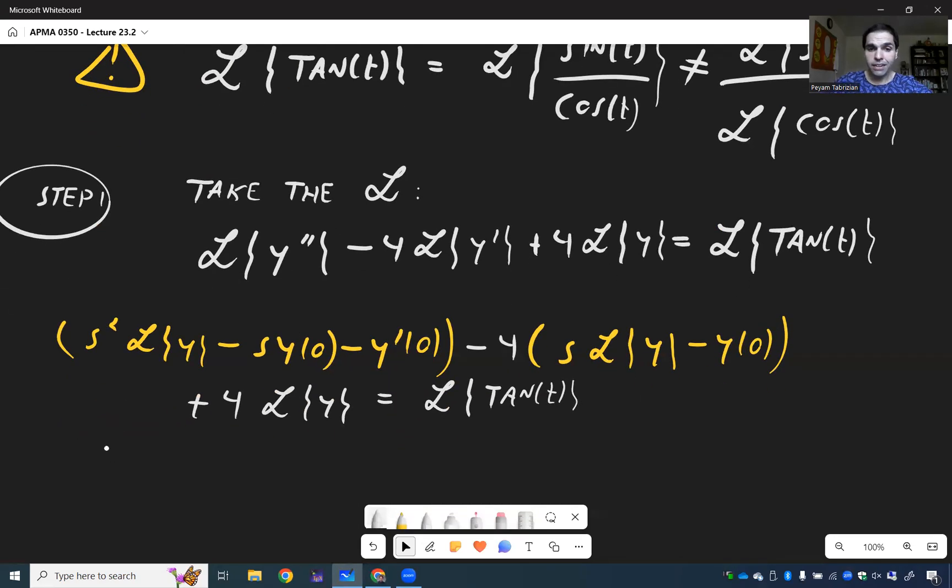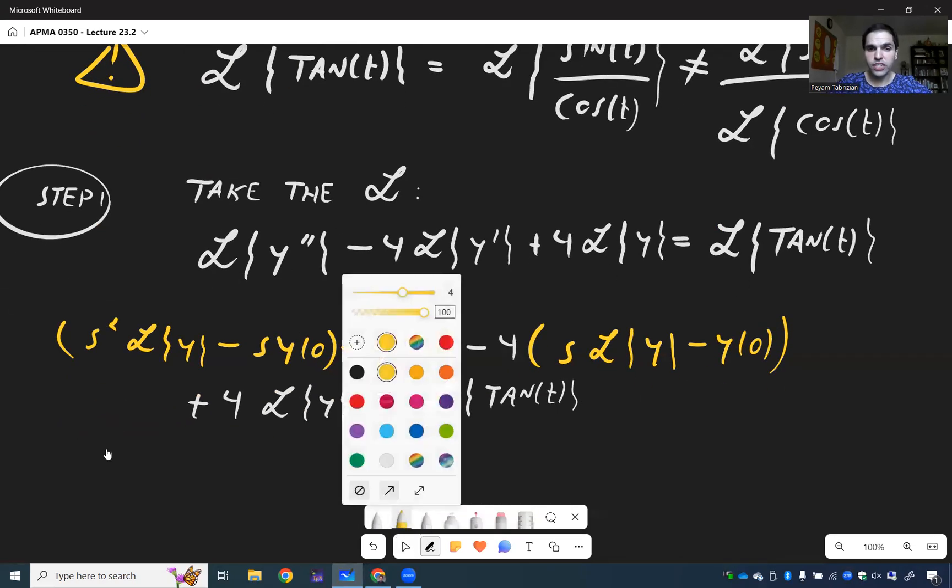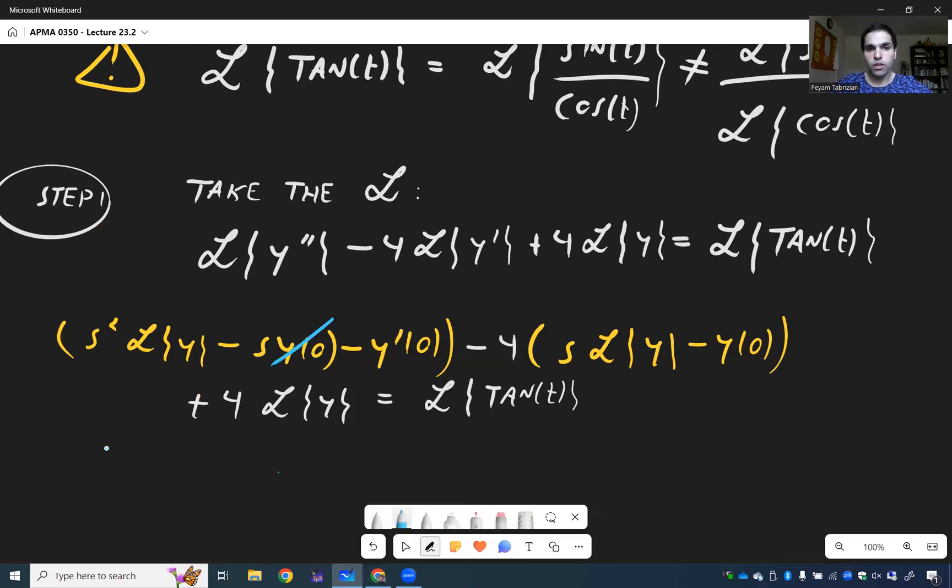And once again, remember the initial conditions are 0. So all those pesky terms become 0 and we're left with S squared minus 4S plus 4, L of y is L of tangent of t.